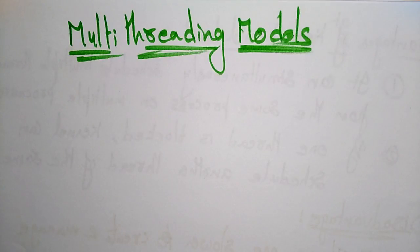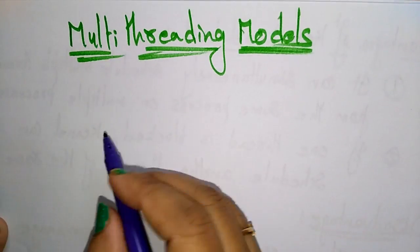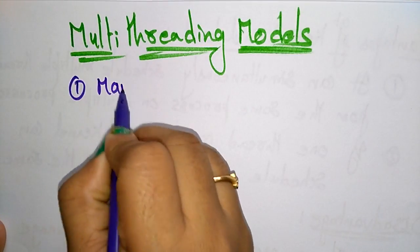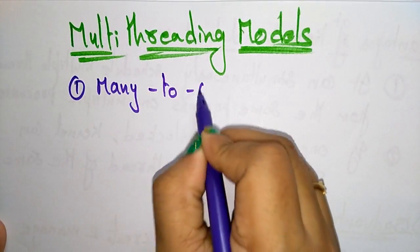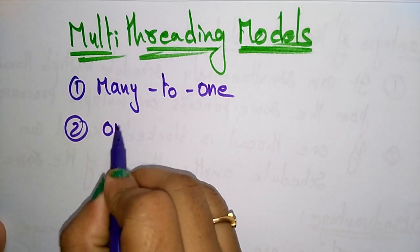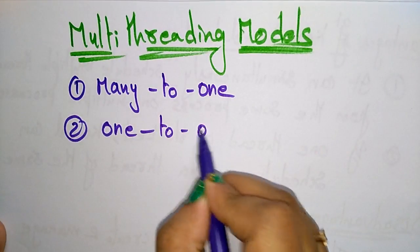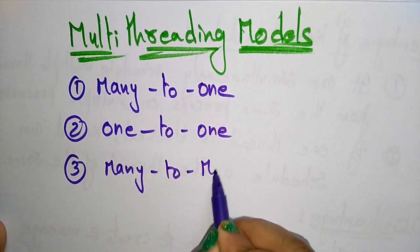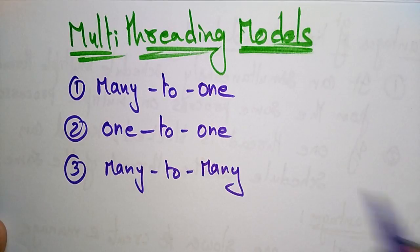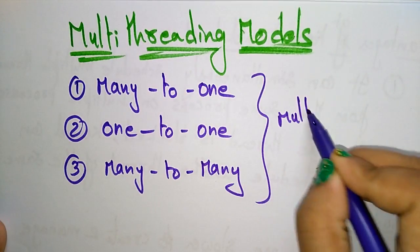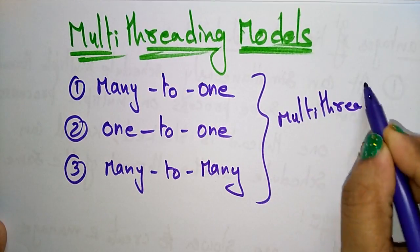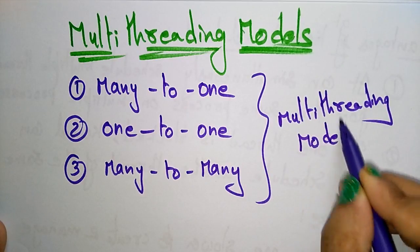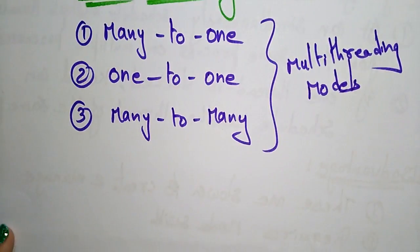Hi students, coming to the next concept in threads — that is the multi-threading models. There are three different types of multi-threading models: many-to-one, one-to-one, and many-to-many models. Let us discuss them one by one.